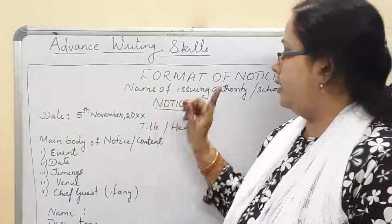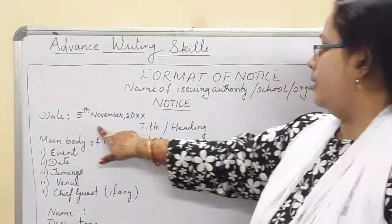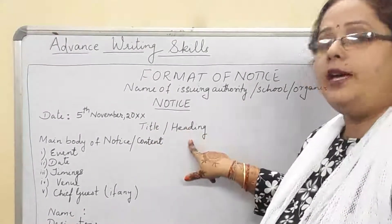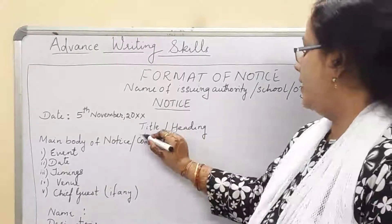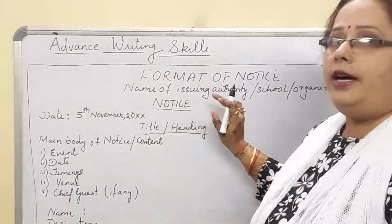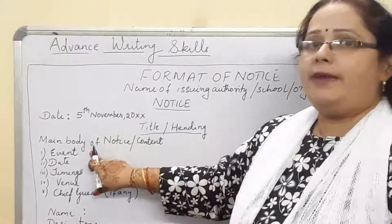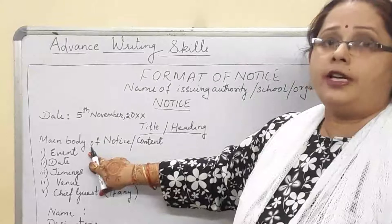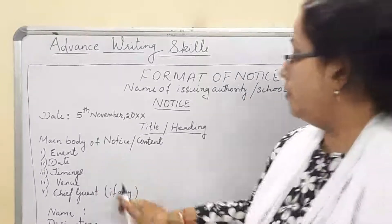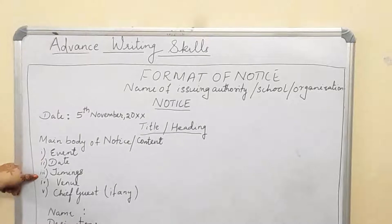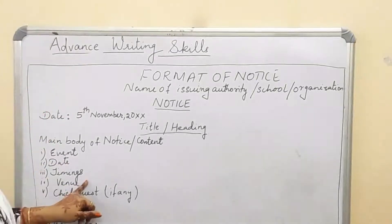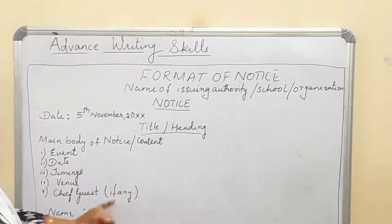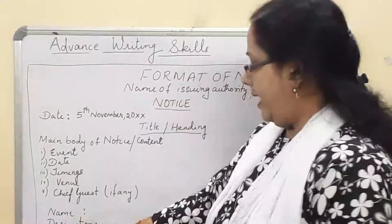You are not allowed to write '2020' — write '20XX'. This comes under the date format. Then comes your title or heading, which also needs to be underlined. Then comes the main body of the notice — the content. You need to write the event, date, timings, what, when, and where the venue is. If any chief guest is to be invited, you need to write the chief guest details.